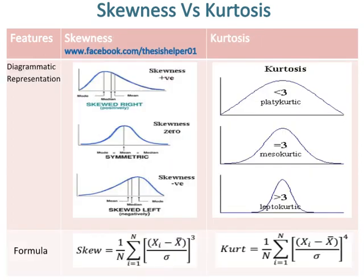Skewness versus kurtosis: diagrammatic representations of skewness and kurtosis are given. In skewness, you can see three diagrams: the first diagram is skewed right, which is positively skewed; the second diagram is symmetric, having zero skewness; and the third diagram is skewed left, which is negatively skewed. For kurtosis, in the first diagram of platykurtic, the kurtosis value is less than 3; in the second diagram of mesokurtic, the kurtosis value is equal to 3; and in the third diagram of leptokurtic, the kurtosis value is greater than 3.